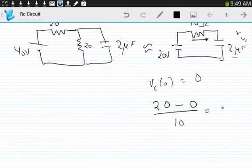This is going to be 2 times E to the negative T over 2 times.